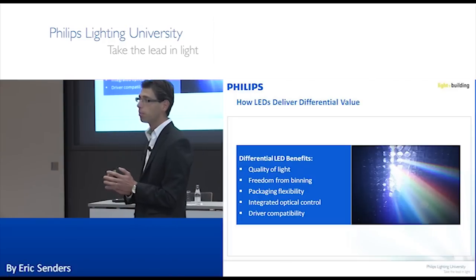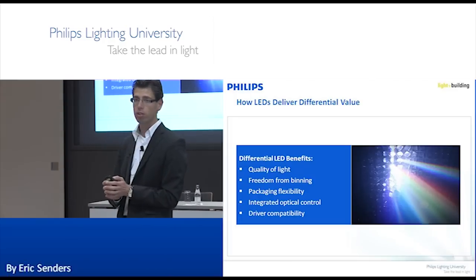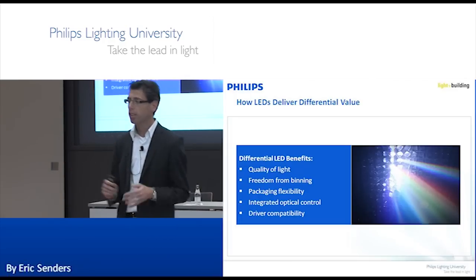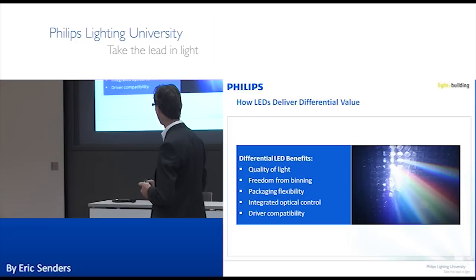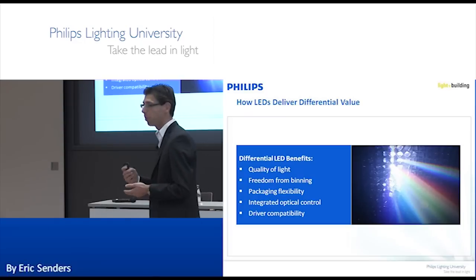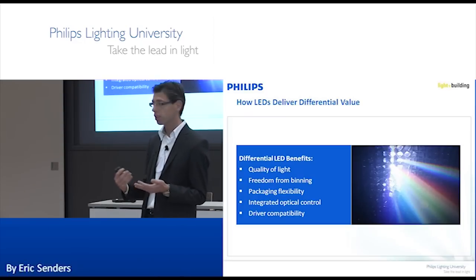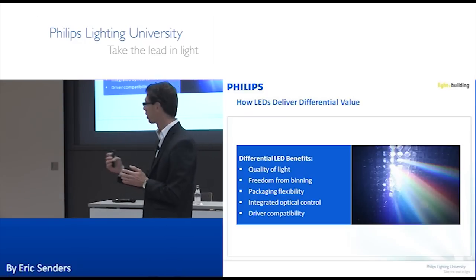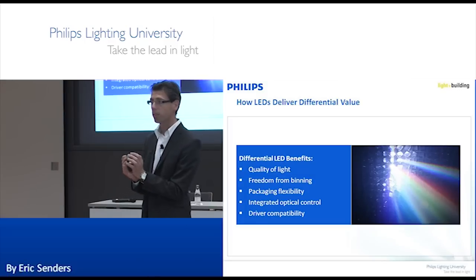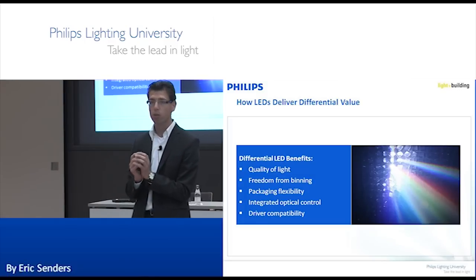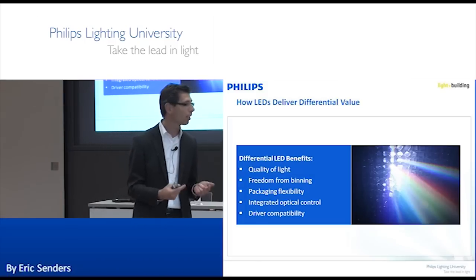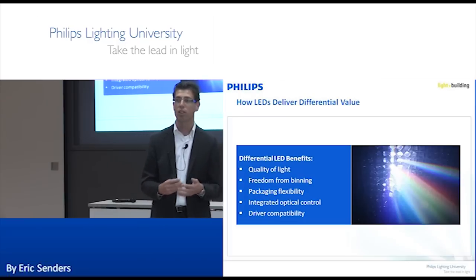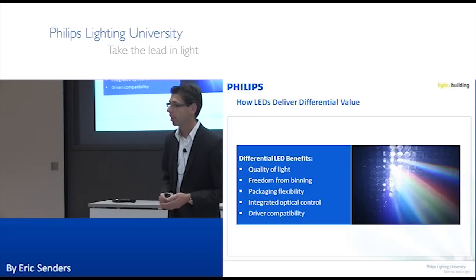Quality of light means improving binning solutions, addressing the issues that existed initially. It also means packaging flexibility, making sure it fits with driver solutions and with optical control. Those are the things to think about in an application-driven way in order to stand out as an LED manufacturer.